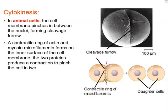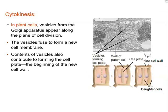In plant cells, a cell plate forms between the nuclei. The material to form the cell plate comes from vesicles derived from the Golgi apparatus, which contain proteins and sugars. In order to build and expand the cell wall as the cell grows, photosynthesis must take place so that sugars can form cellulose, which is laid down to make the cell wall.